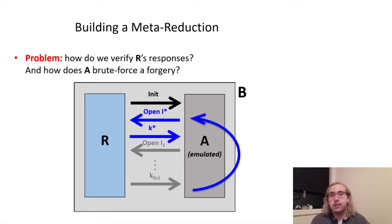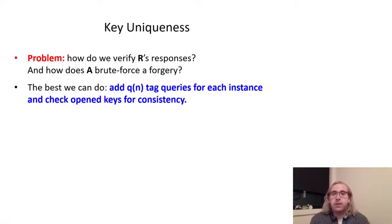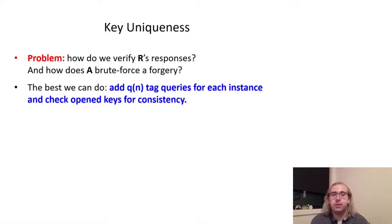Second, and relatedly, we haven't discussed the ideal and inefficient adversary A yet. A needs to be able to brute force a forgery, which is impossible to do without some way to internally verify whether a guess is correct. What we do to provide this internal verification is as follows: we have A and B additionally make some number of tagging queries on random messages to each instance before opening any keys. Then, once R responds to a key opening query, we can check whether that key is consistent with the tagging queries we made. If it isn't, then the key is invalid and we can abort. Furthermore, A can use the queries made for the target instance to brute force a key to use for its forgery. Unfortunately, this approach isn't perfect since intuitively it's occasionally possible for an incorrect key to slip through and, by pure coincidence, agree with the right key on all of the Q tag queries. We can, however, show that the chance of this coincidence is fairly small.